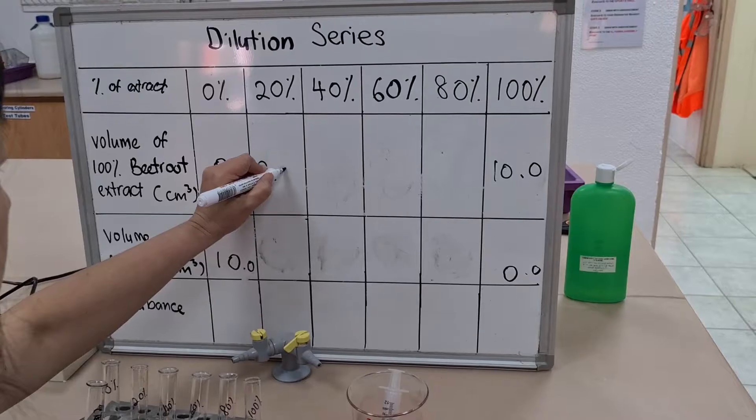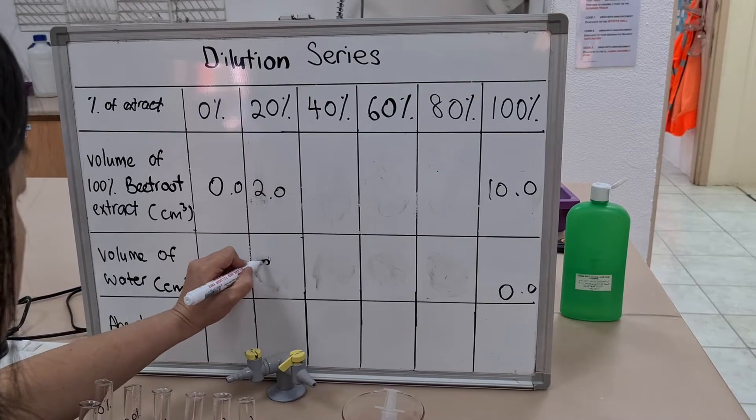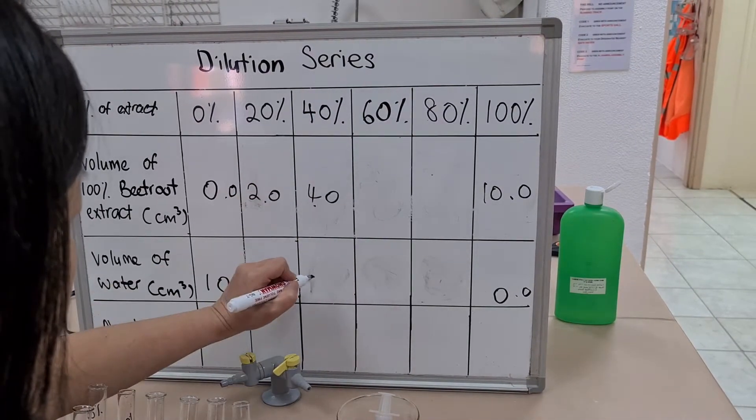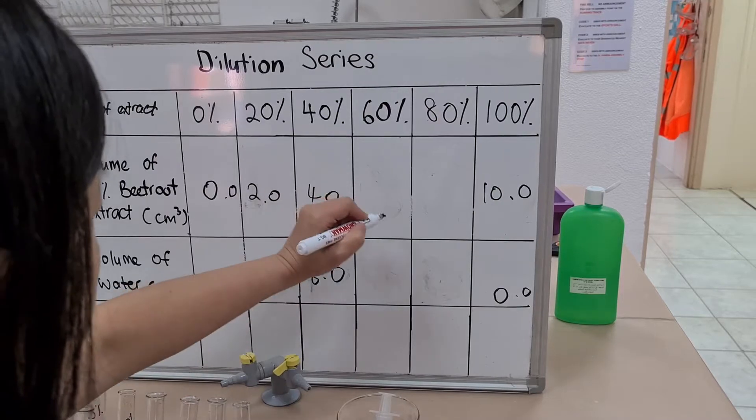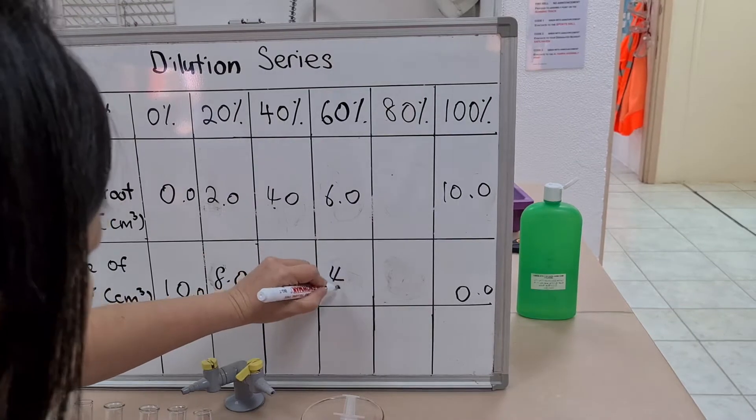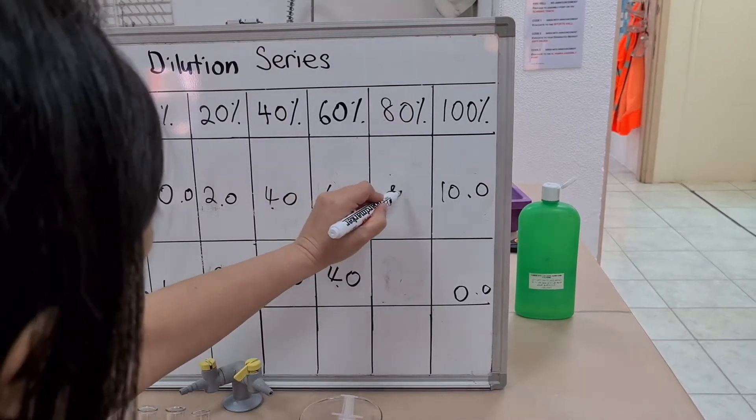Today, we will again be doing a dilution series, but it's a percentage dilution series. Sometimes we want to make a dilution series of a stock solution. What might that be? It might not be something that is chemical based. It might be a plant extract.